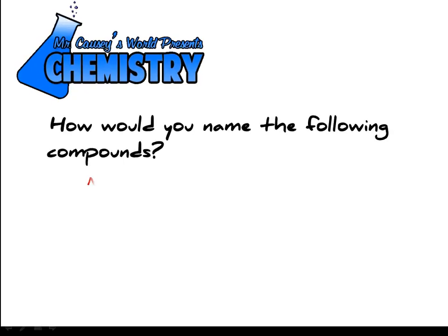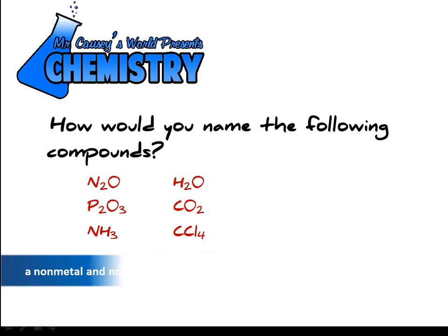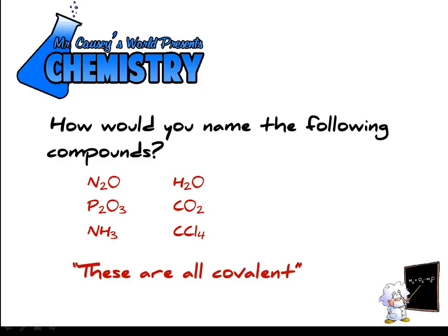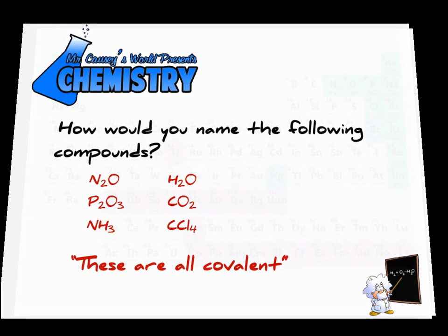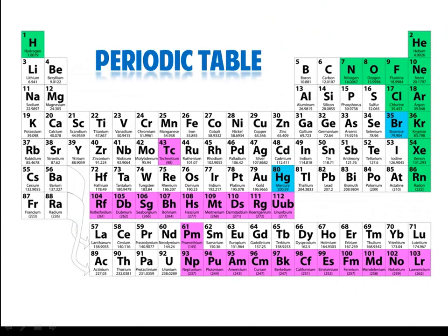Nomenclature can be difficult if you don't know your information. However, if you can recognize ionic compounds and covalent compounds, you can get your periodic table out and know the elements. With a few simple rules, you can name compounds fairly easily. One thing to note about these elements is that they are all covalent — nonmetals and nonmetals — and nonmetals together are covalent for the most part. So get out your periodic table and get out your roots and prefixes.